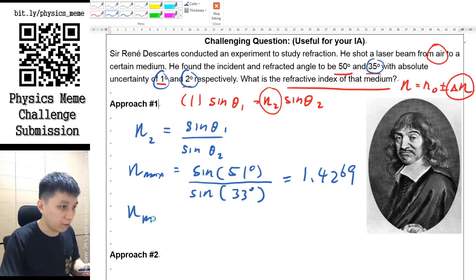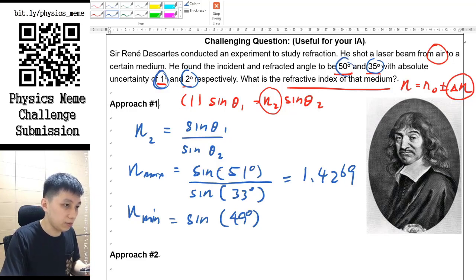By applying the same method, then you can find the minimum of refractive index. So let me just show you. This time we will choose 49 degrees because once again it's 50 - 1, so you want to make this number smaller.